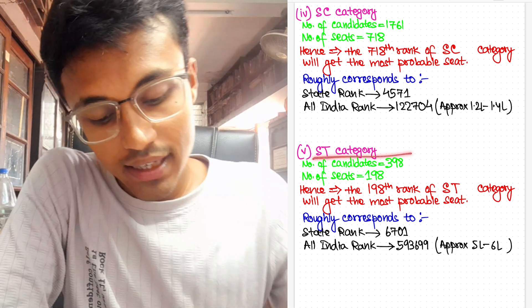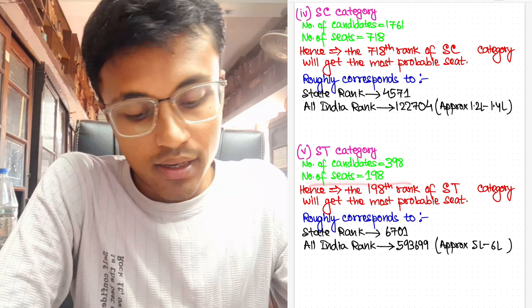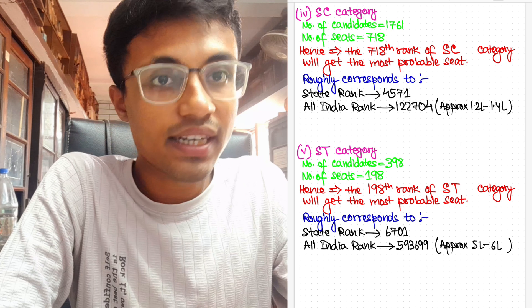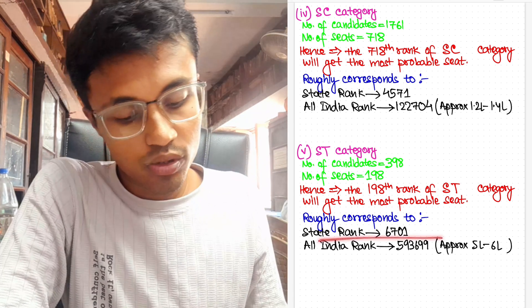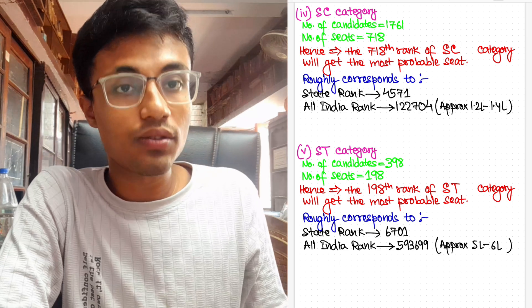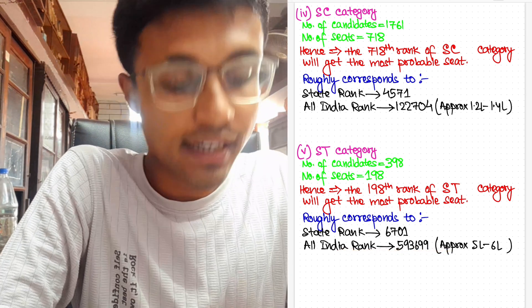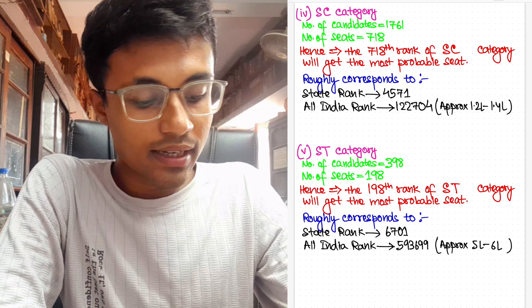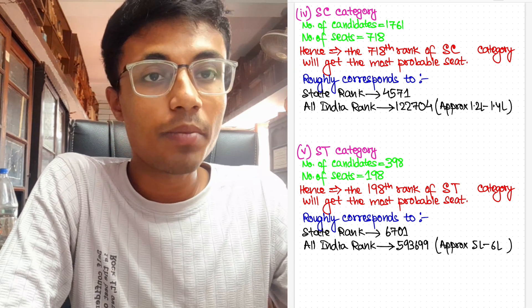Now for ST category, the number of candidates are 398. The number of seats are 198. Hence the 198th rank of ST category will get the most probable seat considering everything was in serial order, which again roughly corresponds to state rank 6,701 and All India rank 5,93,699. My approximation or guess would be anything between 5 lakhs to 6 lakhs. The student of ST category will get the MBBS government seat.